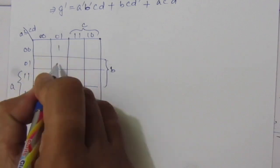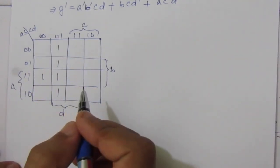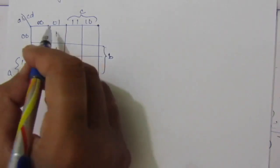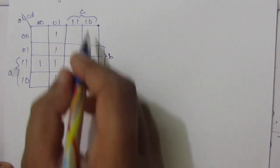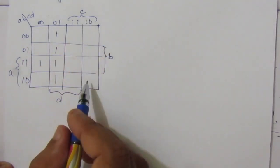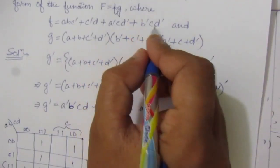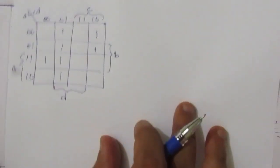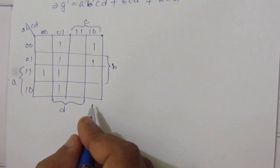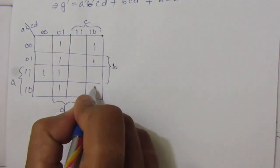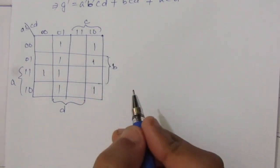The next term a-bar·c·d-bar: c·d-bar is the fourth column and a-bar gives us the first and second rows, so we put one values. Then b-bar·c·d-bar: c·d-bar is the fourth column and b-bar is the first and fourth rows — the first is already occupied, so we put one in the remaining cell. This completes the four-variable K-map for function f.